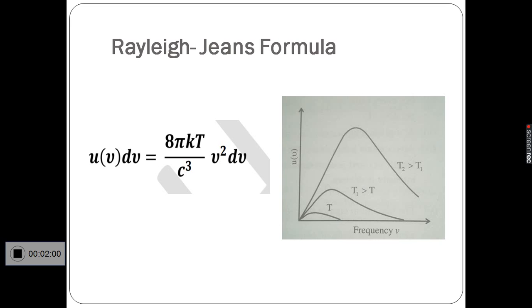This formula successfully explains the low frequency part of the black body spectrum. But when the frequency increases towards the ultraviolet end of the spectrum, this formula predicts that the energy density should increase as ν². In the limit of infinitely high frequencies, the energy density should go to infinity.